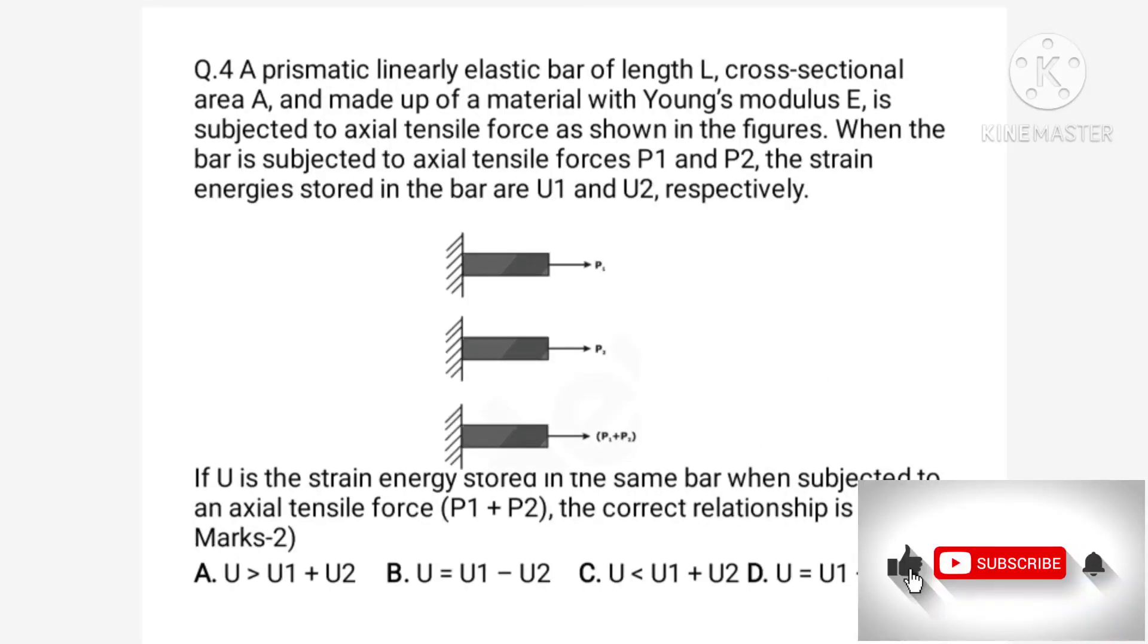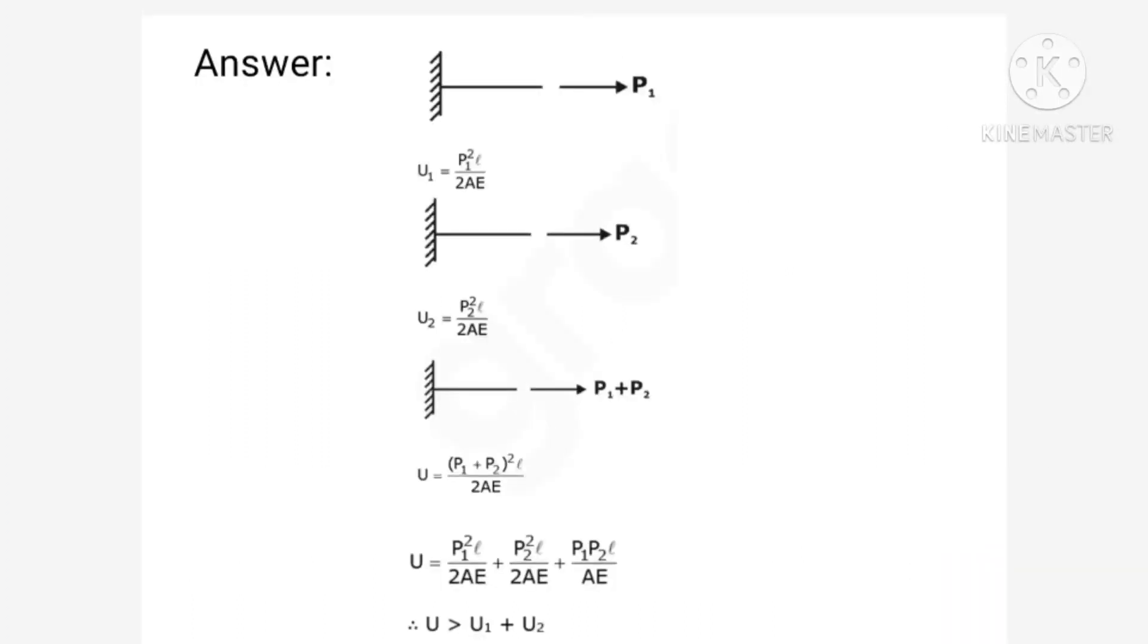Then the arithmetic bar. So there are three cases for this bar which is subjected to axial forces P1, P2, and third case is combined P1 and P2. And we have been asked to find the relationship between the strain energy stored. So here for first case strain energy stored is P1 square L upon 2AE. For second case U2 is equal to P2 square L upon 2AE. And for third case P1 plus P2 bracket square L upon 2AE.